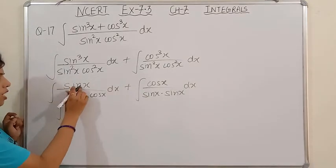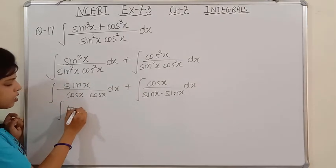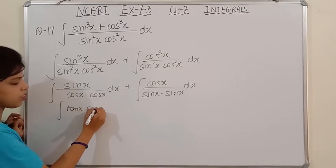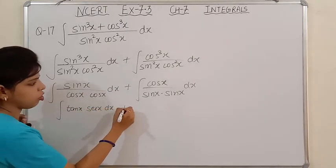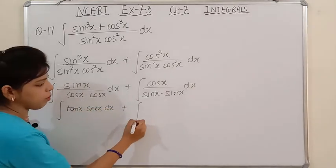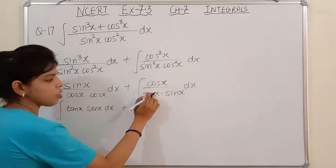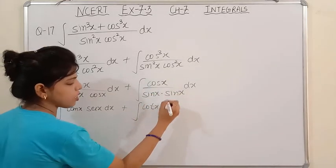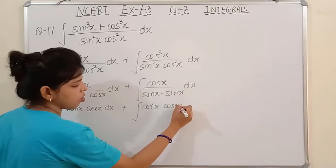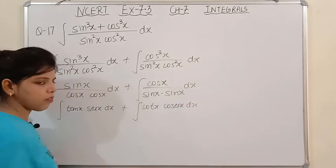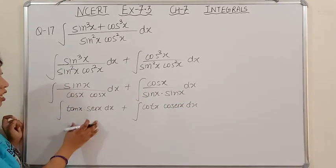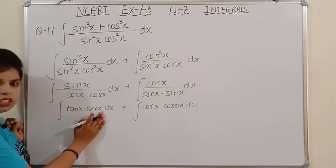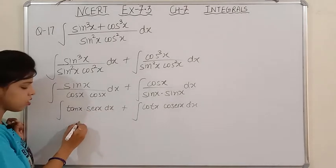In the next step, sin upon cos is tan x, and 1 by cos is sec x. So automatically students will get the hint: cos upon sin is cot x, and 1 upon sin is cosec x. So this question has become completely simplified. Now, tan x · sec x — this is the derivative of sec x, so the integration of this will be sec x. That's simple.